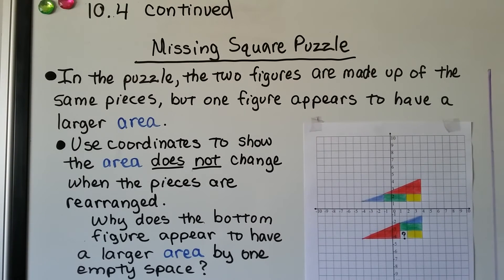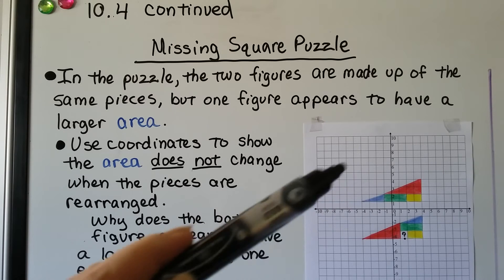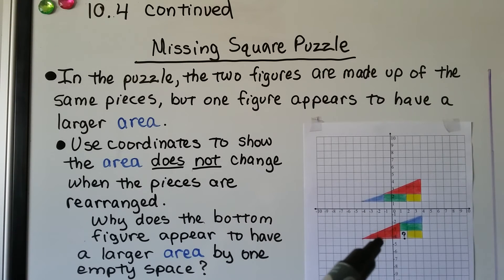Now this is a little bit famous. It's the missing square puzzle. If you look at this diagram, it's got this red figure, this blue one, this green one, this yellow one. But this one also has the red one that's going the same units across and up. It also has the blue ones going the same units across and up. And the green and the yellow one are covering the same amount of units. But the bottom one has a missing square. So in the puzzle, the two figures are made up of the same pieces, but one figure appears to have a larger area because it's got an extra square. We can use coordinates to show the area does not change when the pieces are rearranged. Why does the bottom figure appear to have a larger area by one empty space?